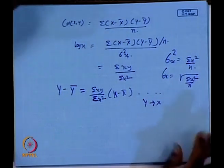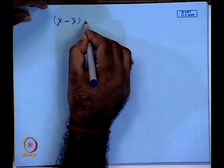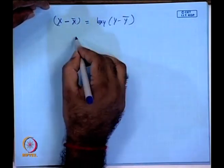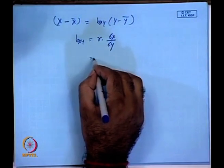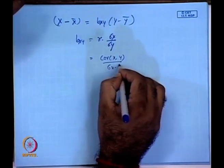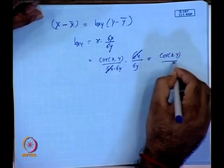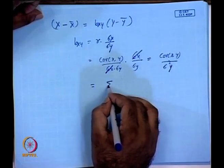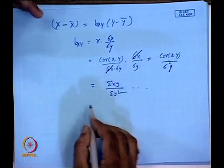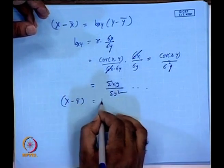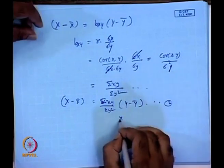Now for the x on y case, the regression equation is x − x̄ = b_xy(y − ȳ). As usual, b_xy = r · (σ_x / σ_y). This equals [Cov(x,y) / (σ_x · σ_y)] · (σ_x / σ_y). The σ_x terms cancel, giving b_xy = Cov(x,y) / σ_y². Further simplifying, b_xy = Σxy / Σy². So the regression equation for x on y is: x − x̄ = (Σxy / Σy²)(y − ȳ).